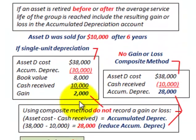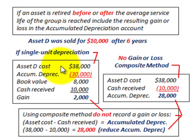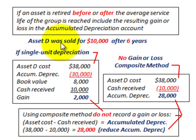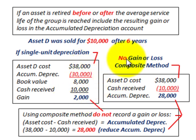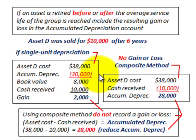When dealing with groups of assets using the composite method, assets that move in and out of the group through sale or other changes are not handled with the single unit method for calculating gain or loss. Instead, you use the composite method. That summarizes the group or composite life method for depreciating a group of assets.